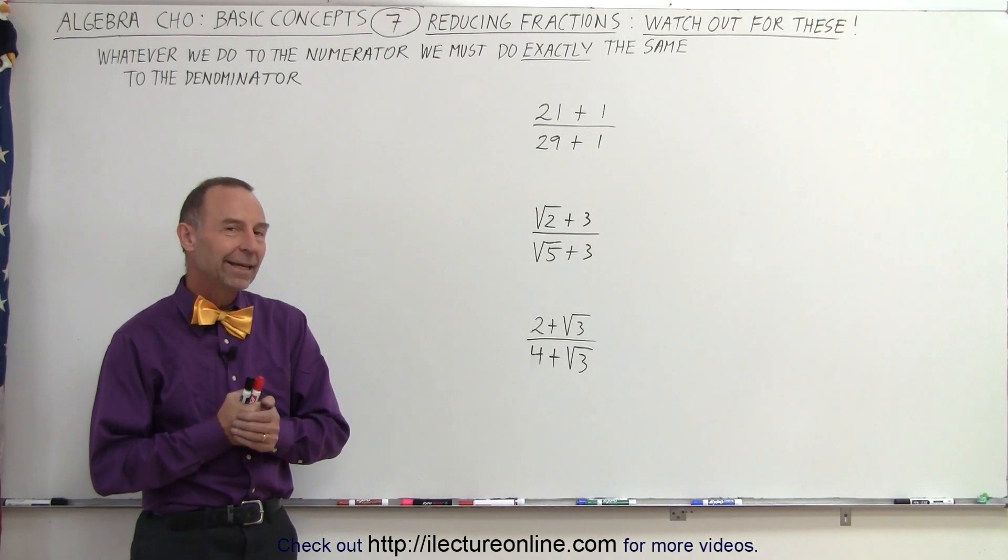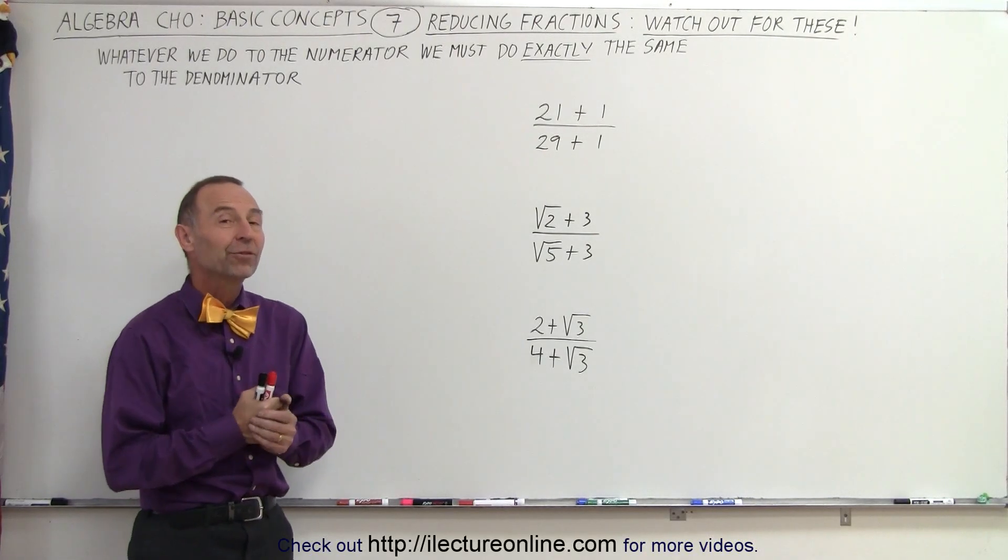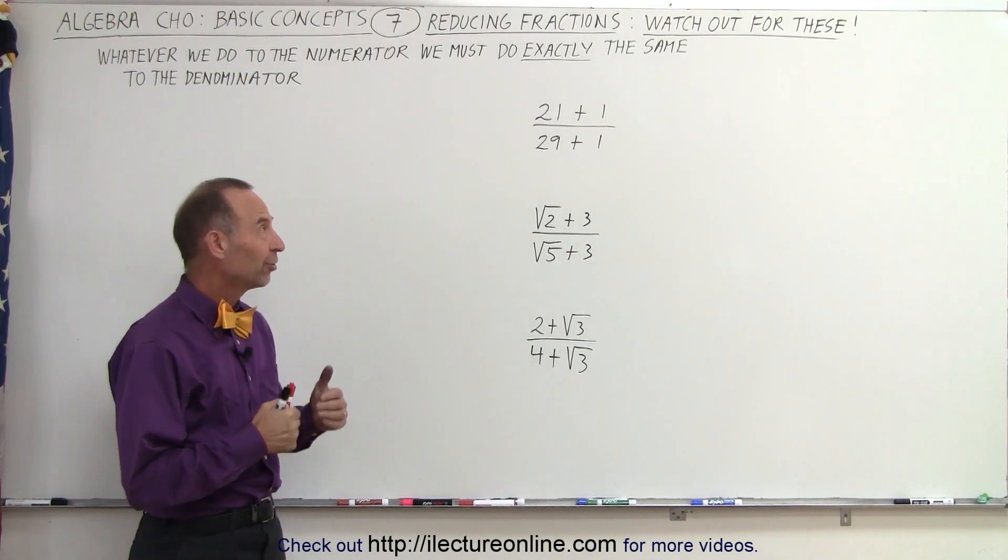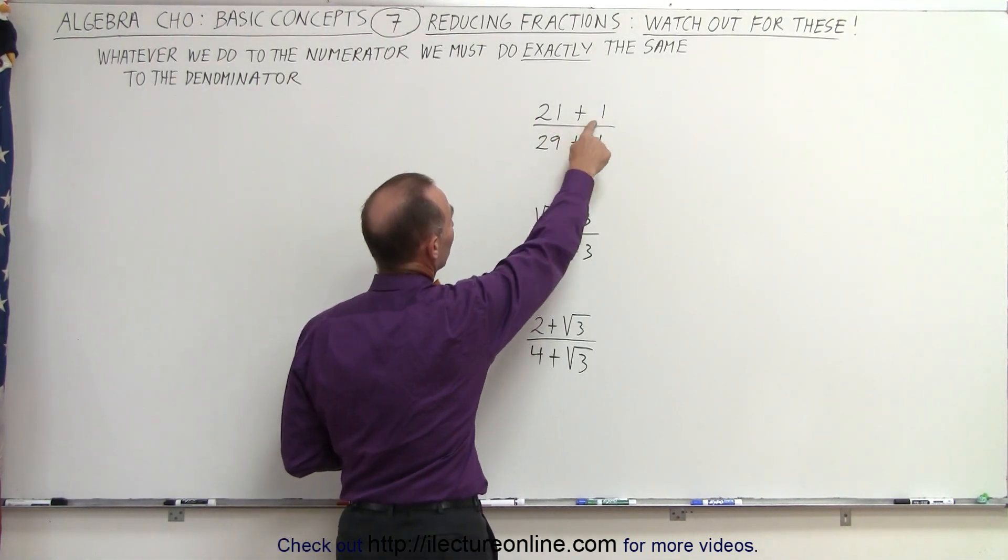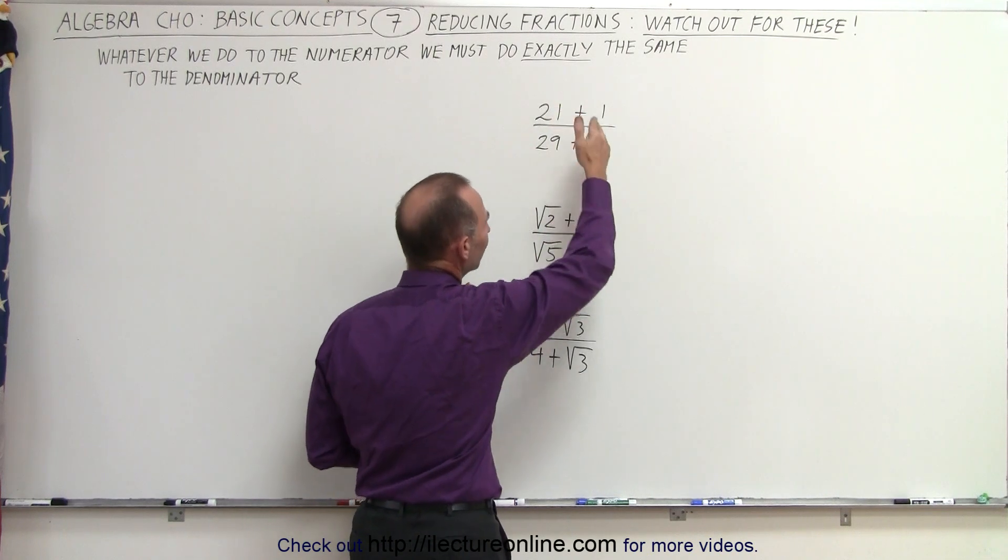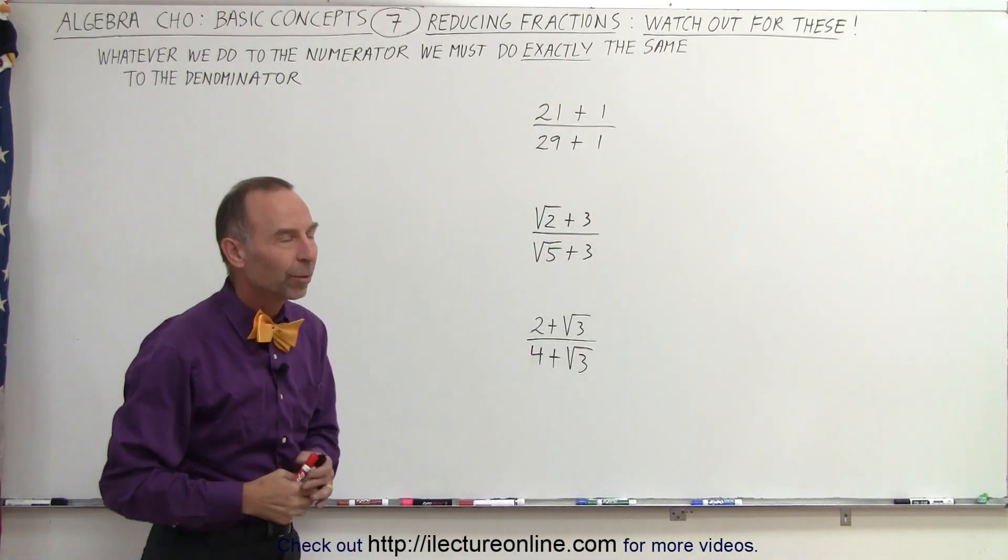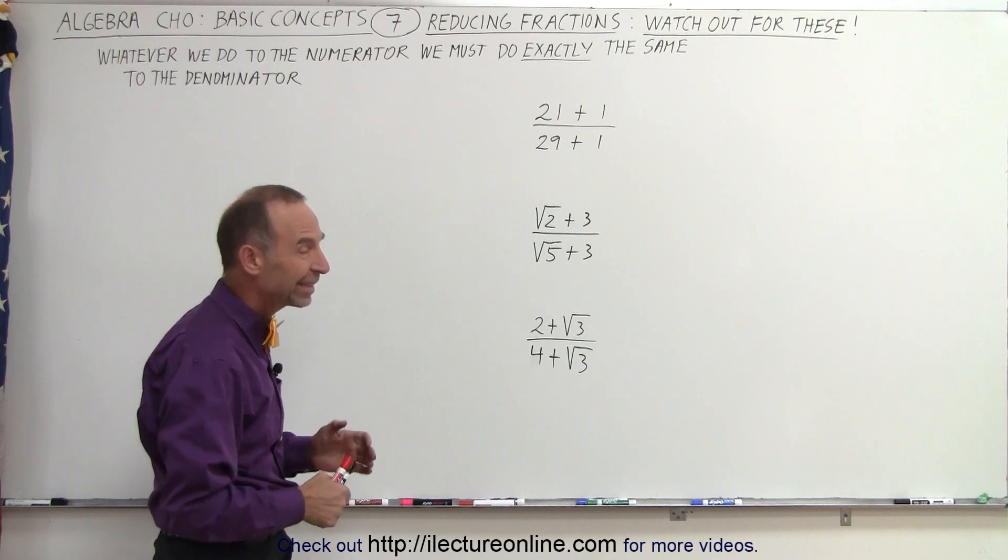Welcome to our lecture online. Here is something that all of us struggle with. It is so tempting to look at something that looks like this and go, wow, we have 21 plus 1, 29 plus 1. Obviously we can reduce the plus ones on both sides. But can we?